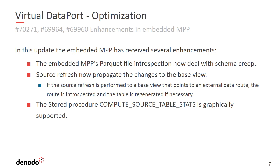The source refresh option now allows the virtual data port server to propagate underlying changes to a base view. When source refresh is performed on a base view that points to an external data source, the source is introspected and the table is regenerated if necessary. The predefined stored procedure compute source table stats is now graphically supported. This stored procedure takes a specified base view as an input parameter and executes the necessary commands on the underlying data source, meaning the statistics of the table referenced by that base view are computed. Please note that this operation computes statistics based on the underlying data source.